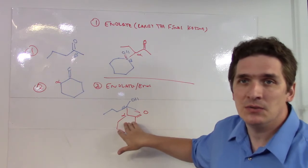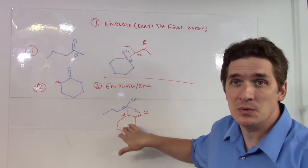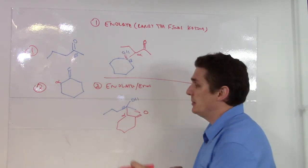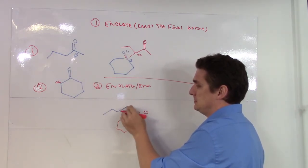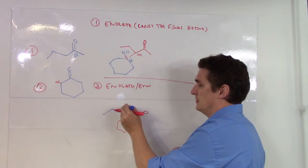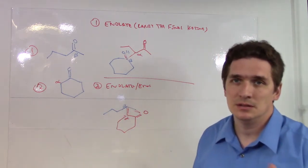Now, this is the aldol addition. If we were running under neutral conditions, this is what we would get. If we're running under acidic or basic, we would end up with the double bond here.